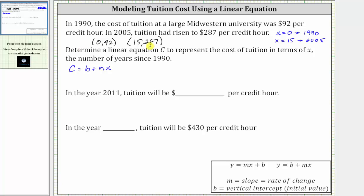Now that we have two ordered pairs, we can determine the equation in the form C equals b plus mx. B is the initial or starting amount, which is the tuition in the base year of 1990, which is $92 per credit hour. So b equals 92.